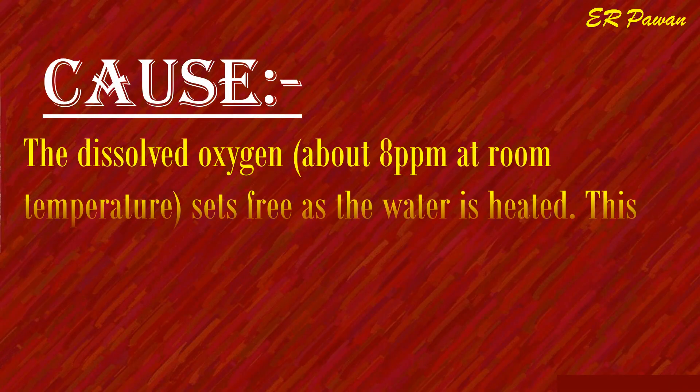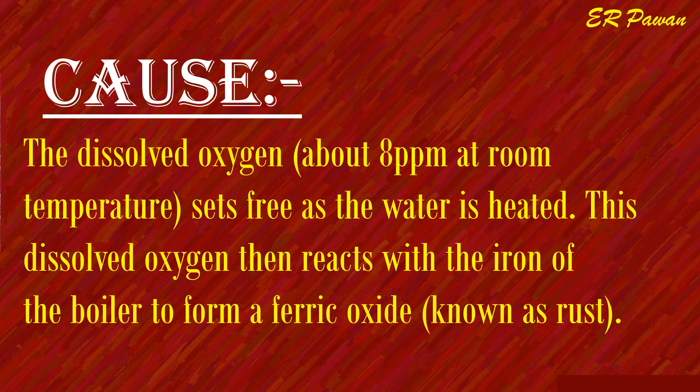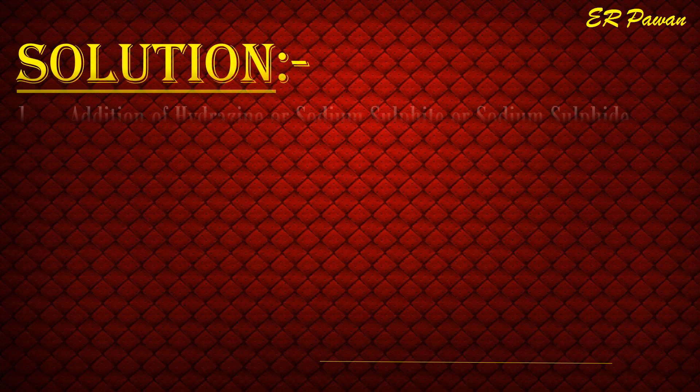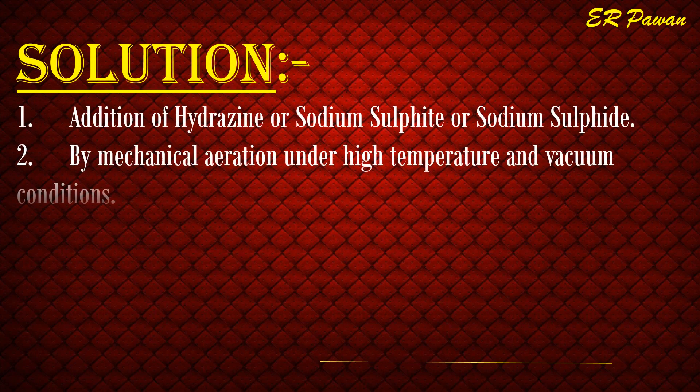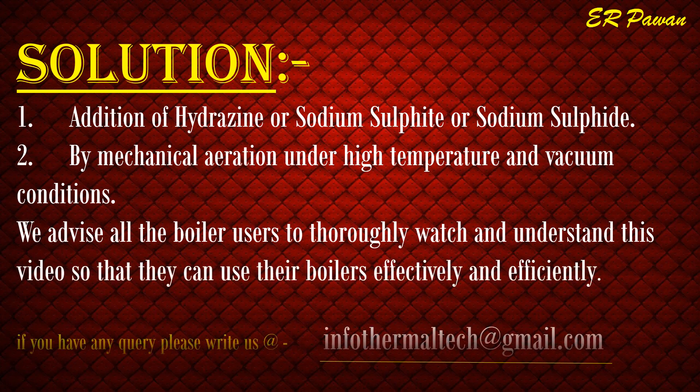Cause of corrosion: dissolved oxygen, about 8 parts per million at room temperature, is set free as water is heated and then reacts with the iron of the boiler to form ferric oxide, known as rust. Solutions: one, addition of hydrazine, sodium sulfite, or sodium sulfide; two, mechanical aeration under high temperature and vacuum conditions. We advise all boiler users to thoroughly watch and understand this video so they can use their boilers effectively and efficiently.